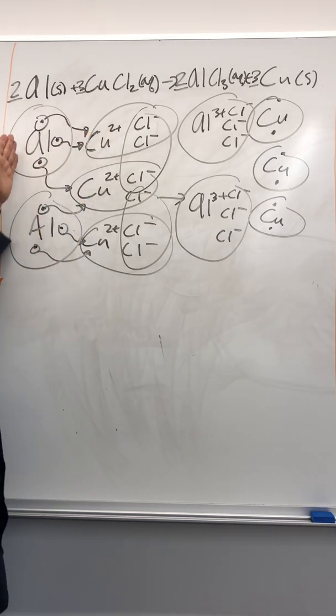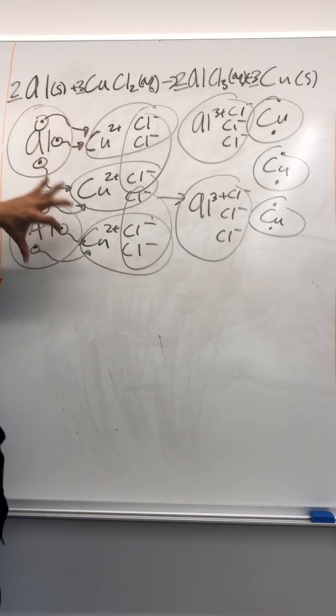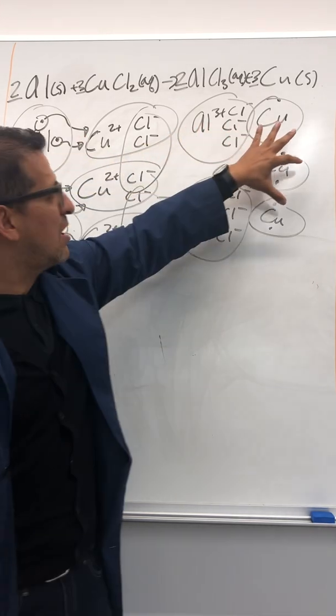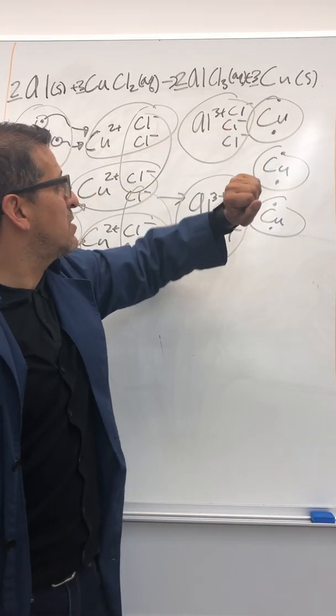Aluminum had three electrons. It gave them to the copper ions. The ratio is two of these to three of these so that all three electrons that are given off are taken by three of these copper ions. They form solid copper, three of those solid coppers.